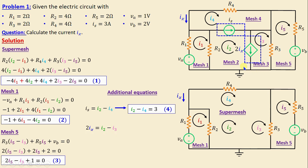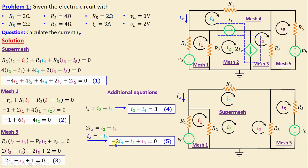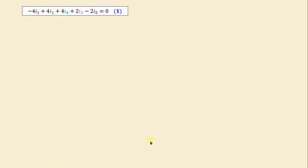Now focusing on the dependent source 2ix, we write: 2ix = i2 − i3. We also know that ix = −i4. Substituting, we obtain equation 5: −2i4 − i2 + 3 = 0. After applying the super mesh analysis, we have five equations with five unknowns.